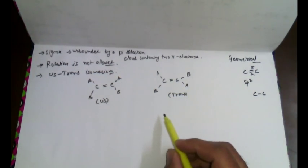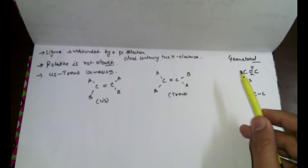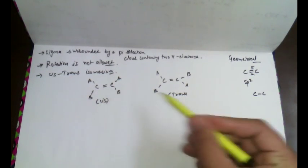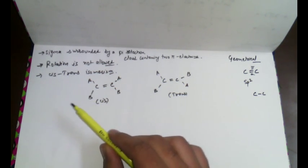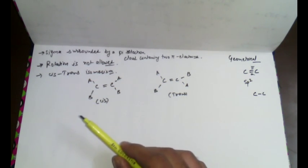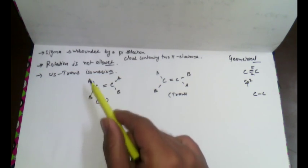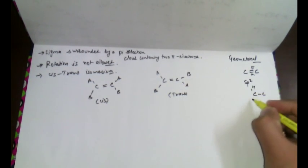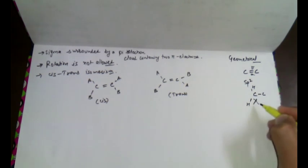The condition for geometrical isomers is that the carbon-carbon double bond must be present. At least one carbon-carbon double bond must exist in the chain. The second condition is that the atom or group of atoms attached to the double bond carbon must be different. If a compound has the same atoms or group of atoms on both sides, it is not a geometrical isomer.